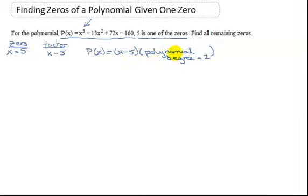First of all, to find the zeros, I need to find this polynomial of degree 2. But we're lucky we know one of the zeros, so I'm going to use synthetic division. This is the easiest way to find this other polynomial.